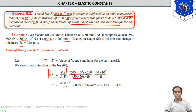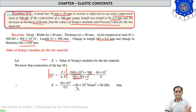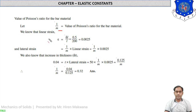By substituting all values into delta-l equals PL by A, Young's modulus equals 80 × 10³ N/mm², which can also be written as 80 GPa. This is the first answer. Now for Poisson's ratio: linear strain epsilon equals delta-l by l equals 0.5 / 200 equals 0.0025.